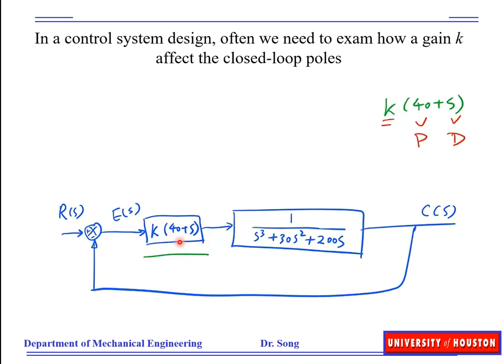The controller is K times (40 + S), where 40 is a proportional controller and S is the operator for differentiation, so it's a derivative controller. We have a closed-loop system with a proportional plus derivative control of this plant, and a combined gain of interest K. We would like to know how this gain K will impact system performance as well as the stability of the closed-loop system.